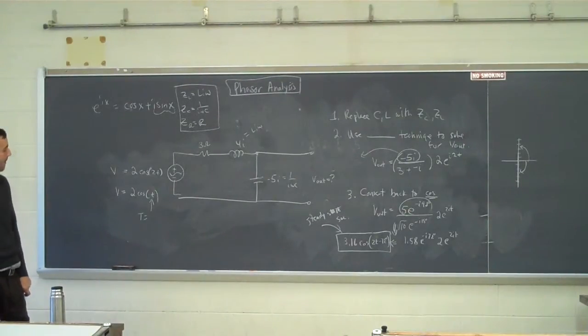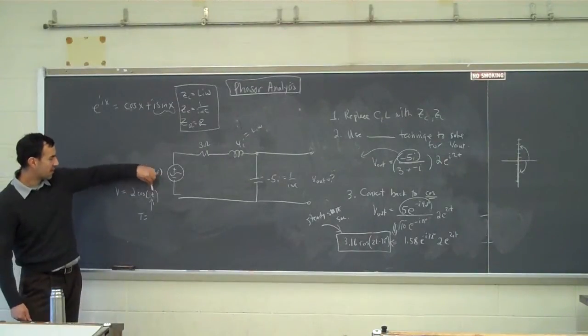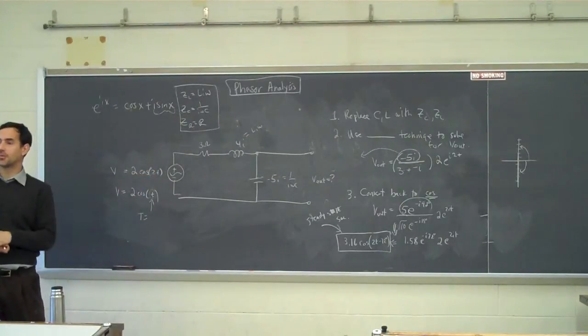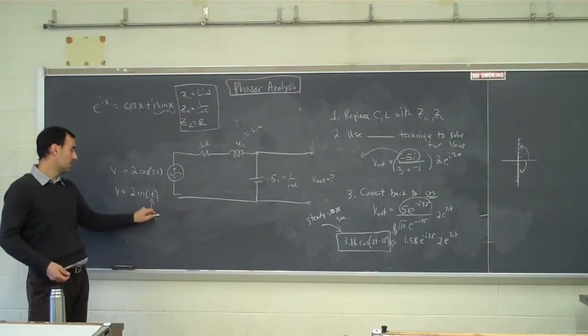A second. No. 2 pi. 2 pi. Because the cosine function, whatever's in there, needs to go up to 2 pi before it repeats. Not 1, but 2 pi. So here the period would be 2 pi.